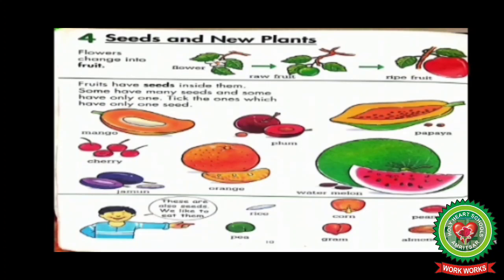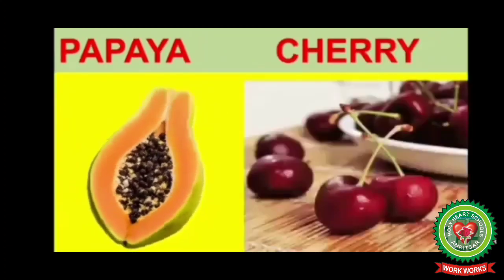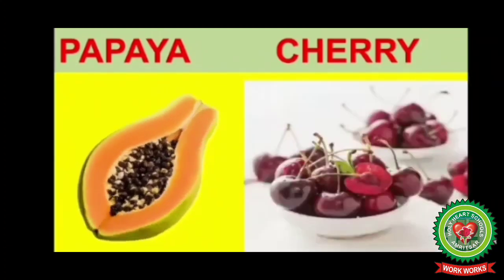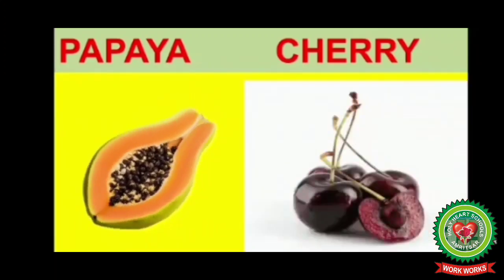Fruits have seeds inside them. Some have many seeds and some have only one. Now, tick the fruits which have only one seed. Mango has only one seed — tick mango. Plum has only one seed — tick plum. Papaya has many seeds, so we will not tick papaya. Cherry has one seed — tick cherry.